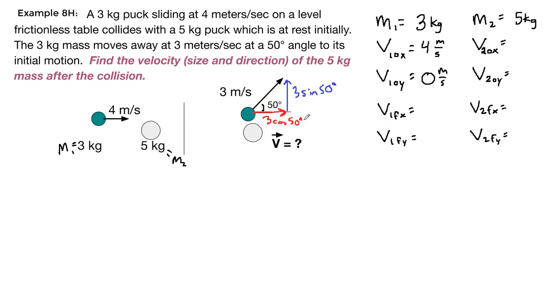That 3 cosine 50 degrees and 3 sine 50 degrees we can put in our calculators. That 3 cosine 50 degrees is our x component, and that's 1.93 meters per second. It's to the right, so we'll call that positive. The 3 sine 50 degrees is the final component in the y direction, and that's 2.30 meters per second. It's up, and we'll call that our positive direction as well.